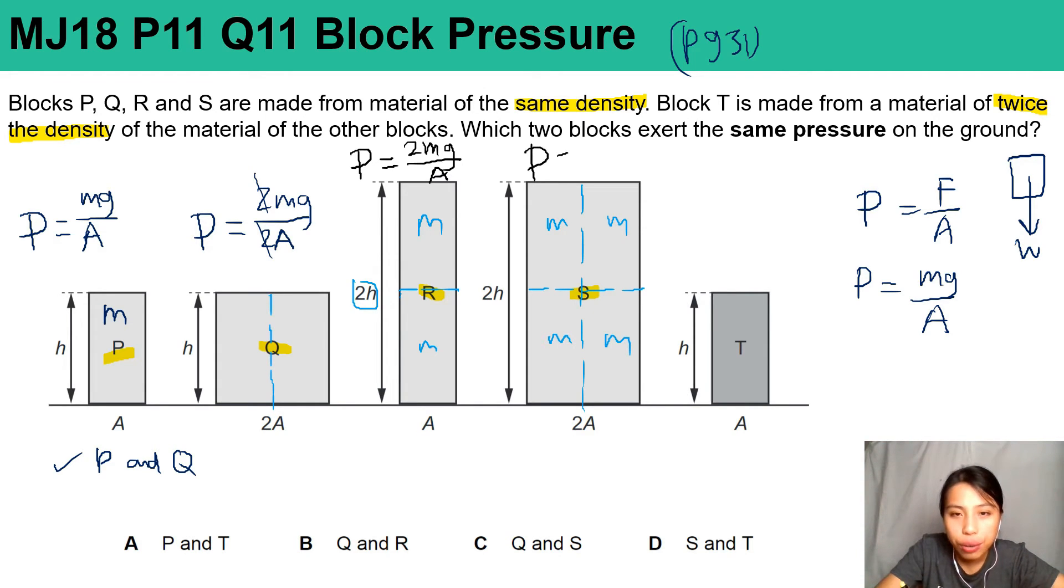So the pressure here will be 4mg over 2A. Let's simplify a bit. This will just be 2mg over A. Oh, that's the same as R. But is there R and S? No sadness.